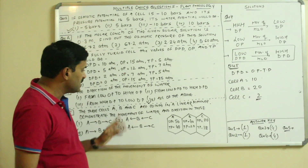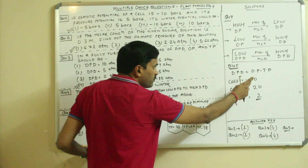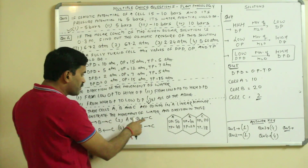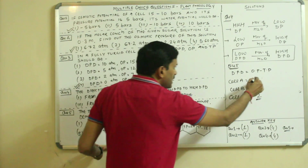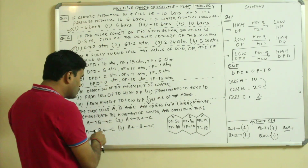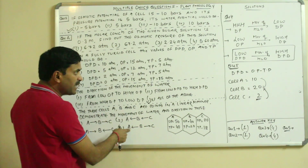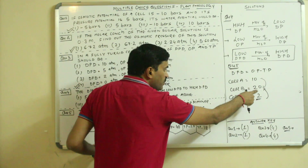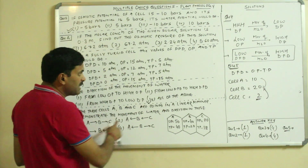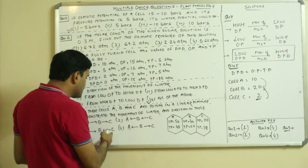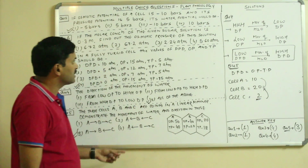With DPD values — C = 2, A = 10, B = 20 — water moves from low to high DPD. So water moves from C to B (2→20) and from A to B (10→20). Option 3 states movement from A to B and C to B, which is correct. The answer to question 5 is option 3.